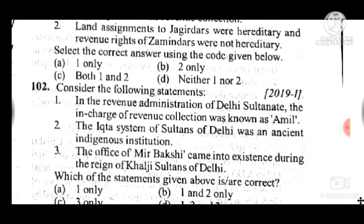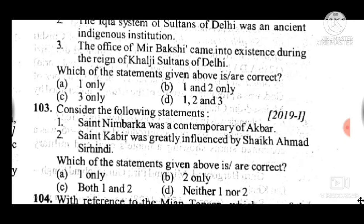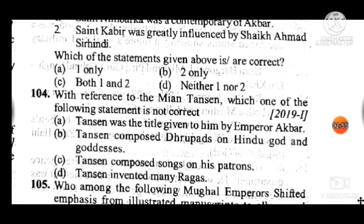Question 103: Consider the following statements — answer is D, neither statement one nor statement two is correct. Question 104: With reference to Mian Tansen, which one of the following statements is not correct? Answer is A — 'Tansen was a title given to him by Emperor Akbar' is an incorrect statement; the B, C, D statements are correctly related to Tansen.